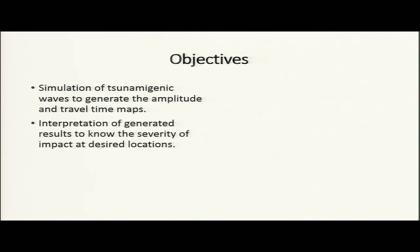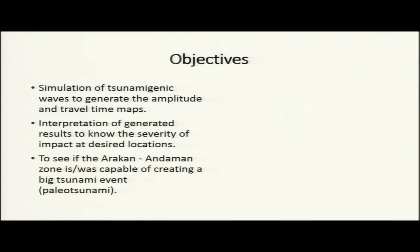Interpretation of generated results allows us to know the severity of impact at desired locations. Locations near the tsunami source, near the subduction zone, prone to earthquake-generated tsunami can be demarcated and risk can be lowered. We need to study the Arakan-Andaman and Sumatra subduction zones, as they are capable of creating large tsunami events, as already seen in 2004.